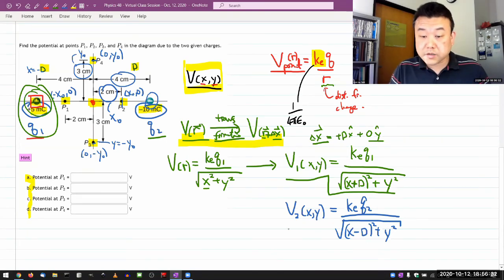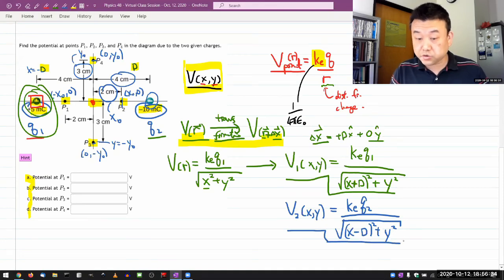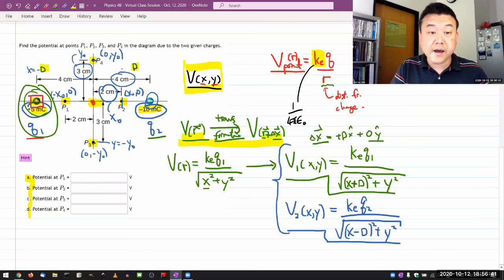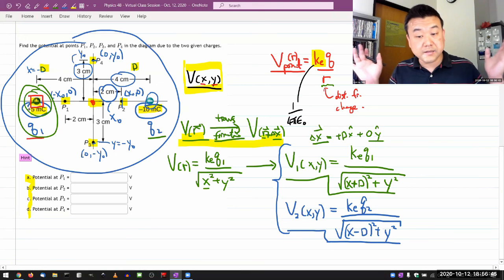Okay, so those are my two contributions to the electric potential at all space. And I've taken care to write both of these expressions so that they are in this particular coordinate system. So I can just add them directly.